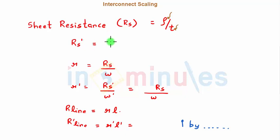So Rs' would be s into rho by T because if I do this, a simplified step is rho into T'. This is constant and T' is T by s. This is exactly what I have done. So my sheet resistance increases by a factor of s.